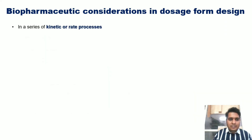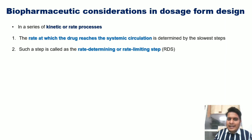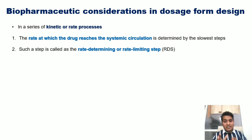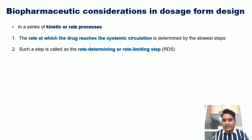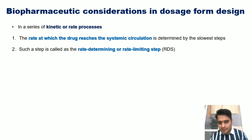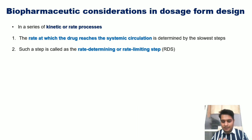In this series of kinetic rate processes, the rate at which the drug reaches the systemic circulation is determined by the slowest step. Whichever step is the slowest among all these processes, that step will determine the rate at which the drug becomes available in the systemic circulation — and that is called the rate-limiting or rate-determining step.